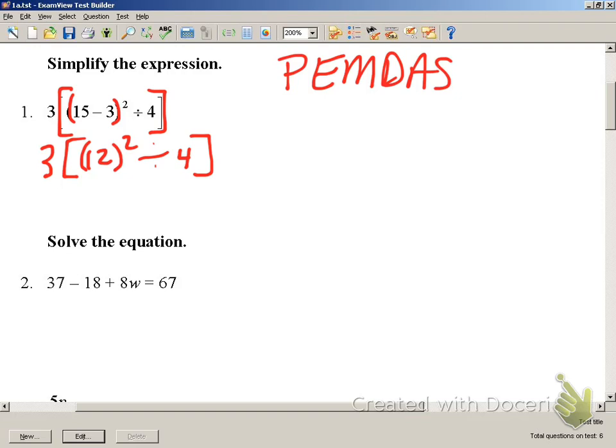Working inside our brackets we have exponents next. That is 3 times 12 squared is 144. Write down the rest of the problem.